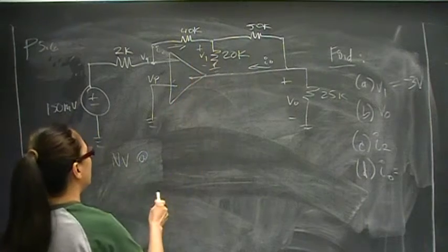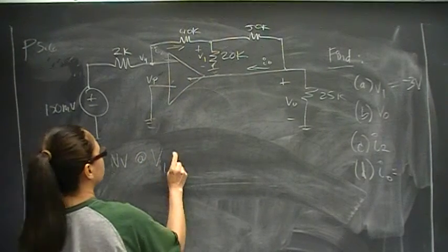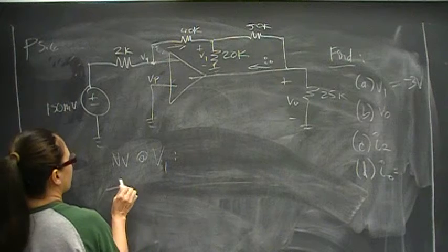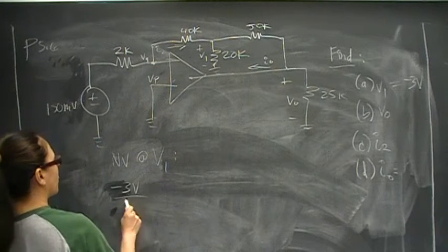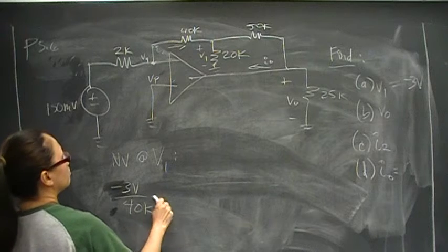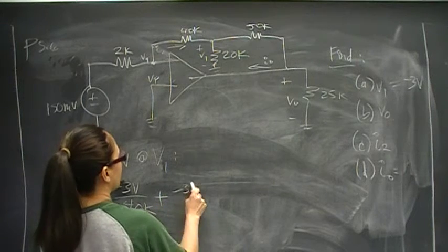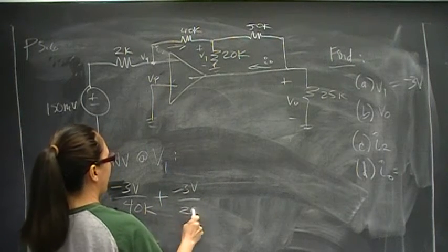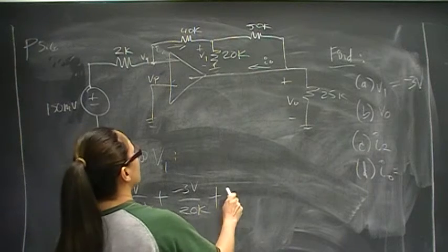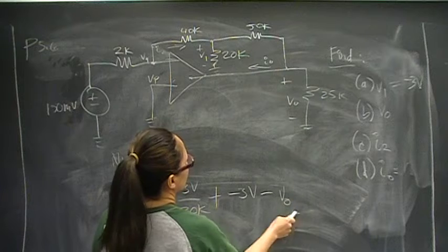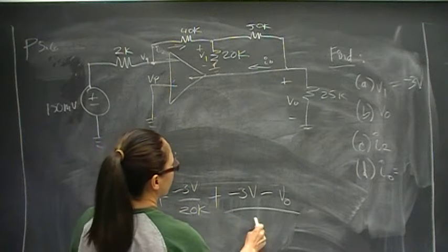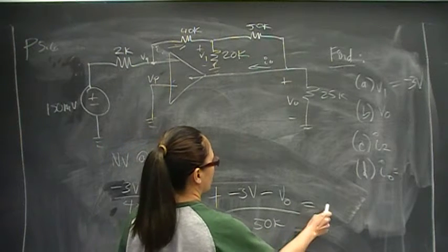It would only work here. So node voltage of V1 is negative 3 volts minus 0 over 40K plus negative 3 volts over 20K plus negative 3 volts minus Vout over 50K equals 0.